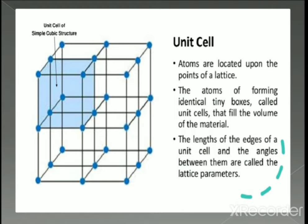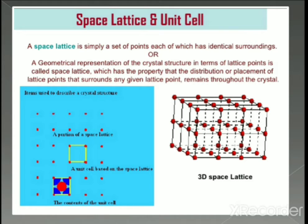A space lattice is simply a set of points, each of which has identical surroundings, or a geometrical representation of the crystal structure in terms of lattice points — this is called the space lattice. It has the property that the distribution of lattice points surrounding any given lattice point remains the same throughout the crystal. These lattice points form the lattice structure, and the basic repeating unit forms the unit cell, giving structure to the crystal lattice.